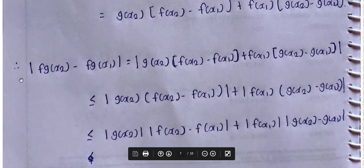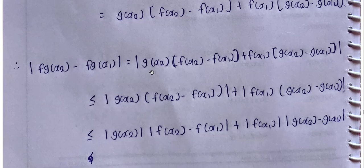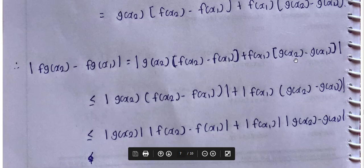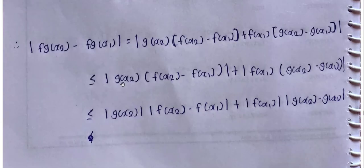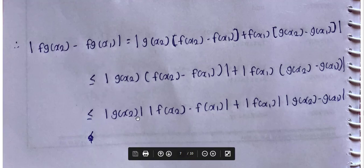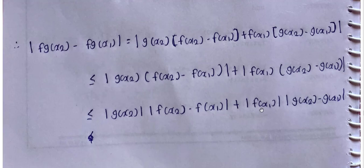So mod of fg(x2) minus fg(x1) equals mod of g(x2) into bracket f(x2) minus f(x1) plus f(x1) into bracket g(x2) minus g(x1). Applying the triangle inequality mod of a plus b is less than or equal to mod of a plus mod of b, this is less than or equal to mod of g(x2) into mod of f(x2) minus f(x1) plus mod of f(x1) into mod of g(x2) minus g(x1).